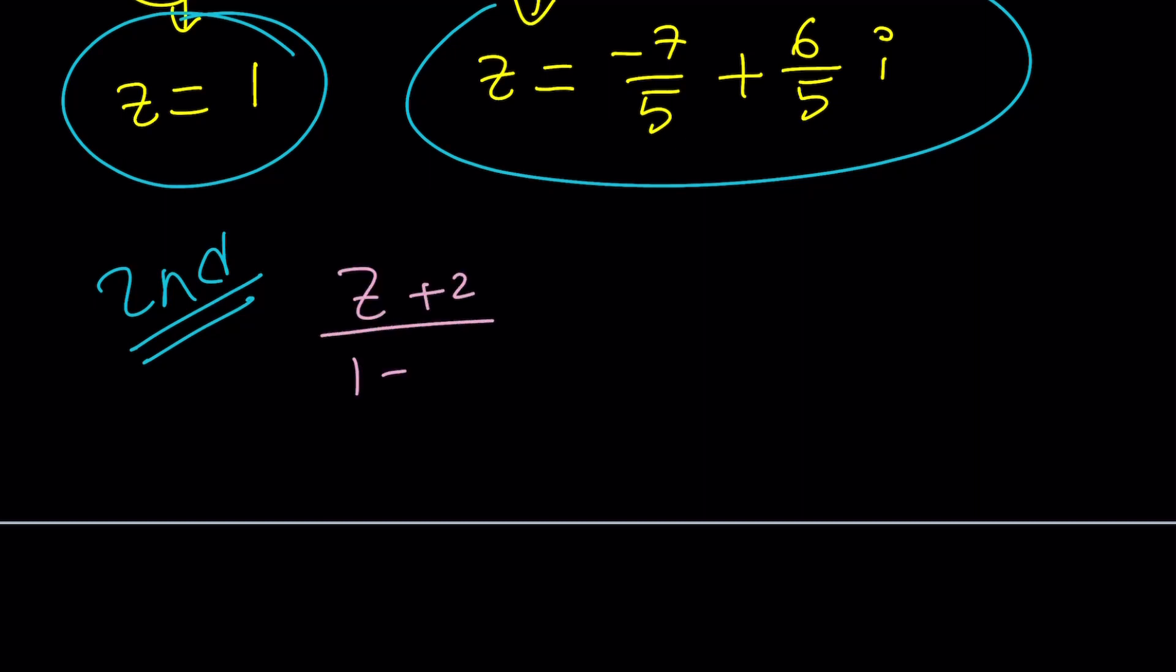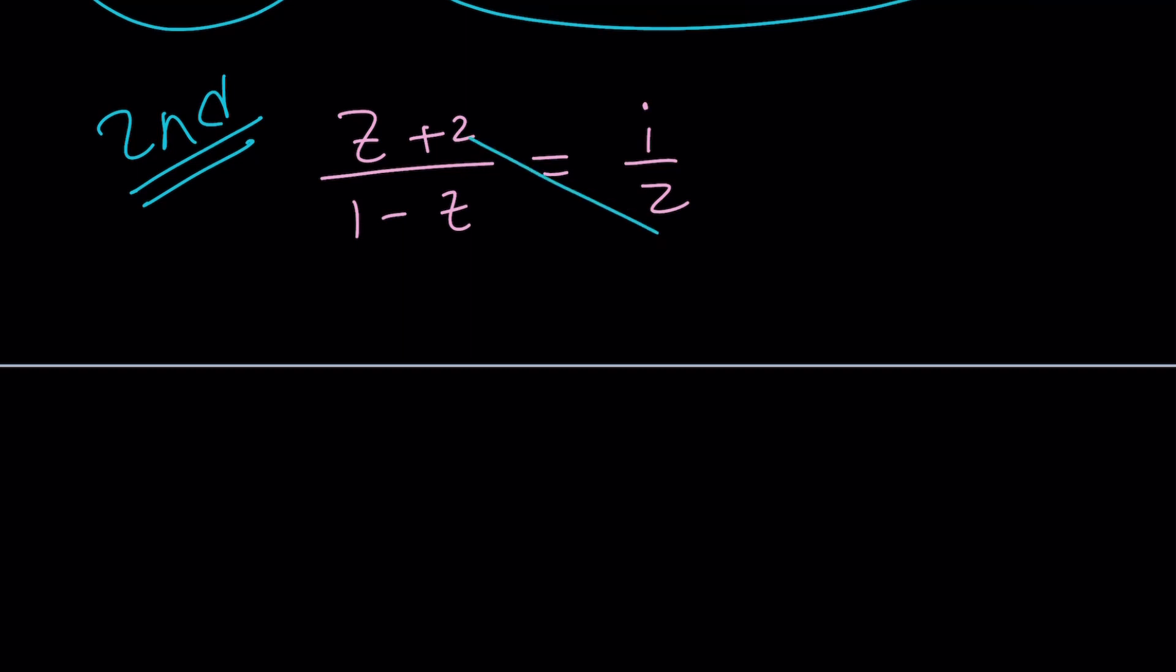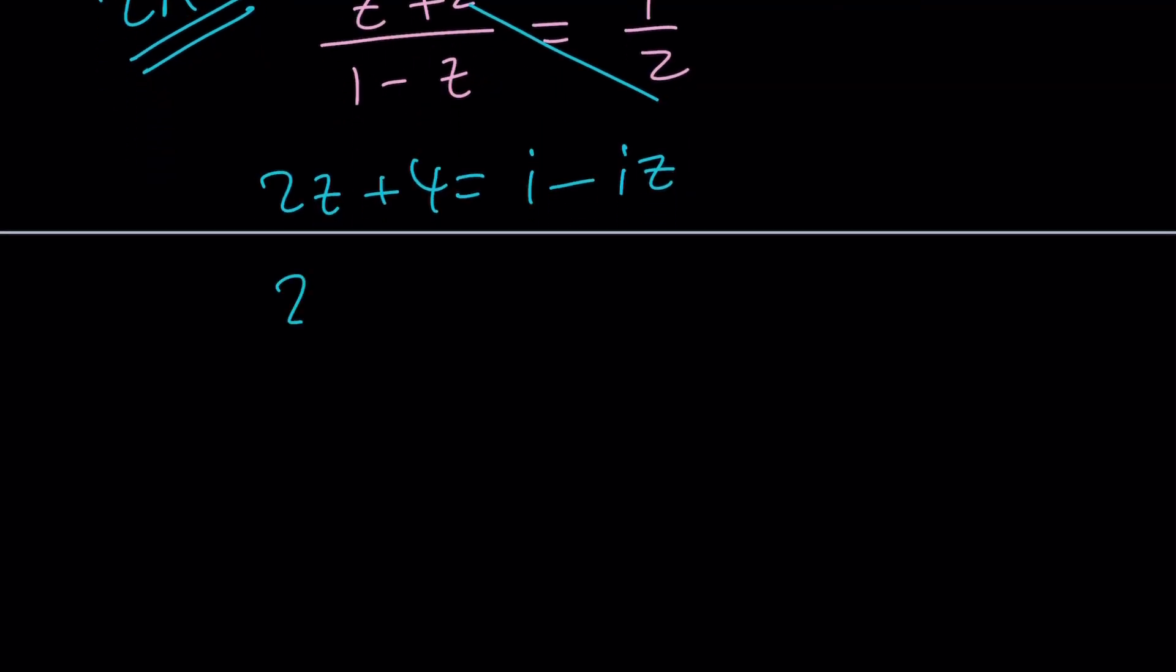Z plus 2 divided by 1 minus Z equals I over 2. We're just going to cross multiply. There's no need to replace Z with A plus BI, but I want to show you the general method, because sometimes you may want an alternative or just to check your work. Anyways, if you cross multiply, you're going to get 2Z plus 4 equals I minus IZ. Let's put all the Zs on the same side. 2Z plus IZ, and then put the 4 on the right, I minus 4. I could probably write this as negative 4 plus I, which is better, because always write complex numbers in standard form. Here, we can factor out a Z.